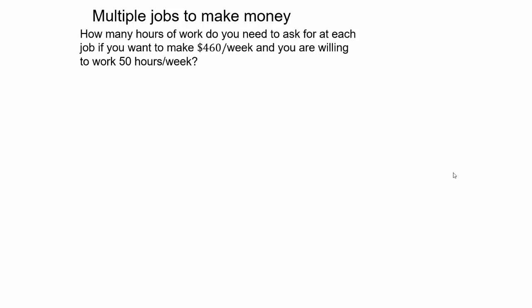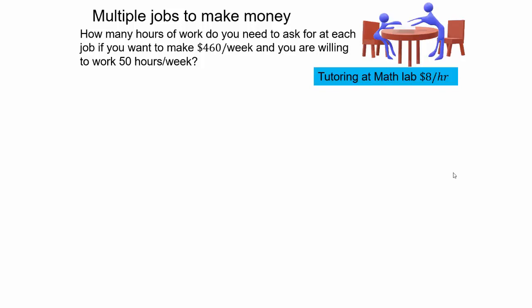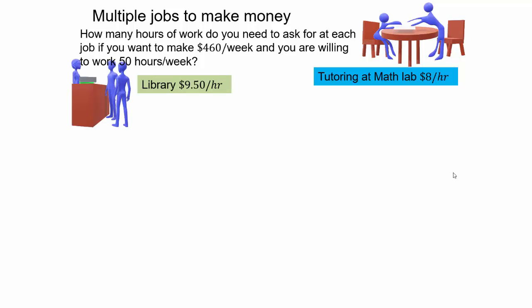Let's take an example of a mixture problem. Say you have multiple jobs and you want to make a certain amount of money. How many hours of work do you need at each of your jobs if you want to make $460 a week and you're willing to work 50 hours a week? The two jobs on campus are tutoring at the math lab for $8 per hour and at the library front desk for $9.50 per hour. Pause the video here and think about how to approach and solve this problem.